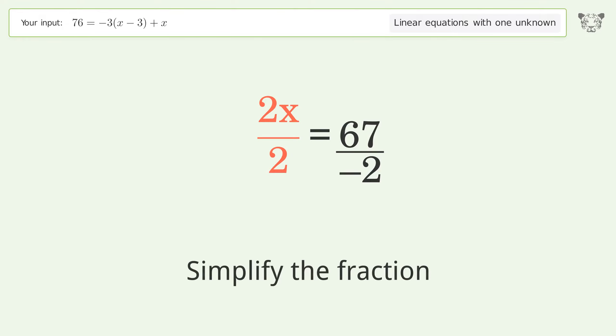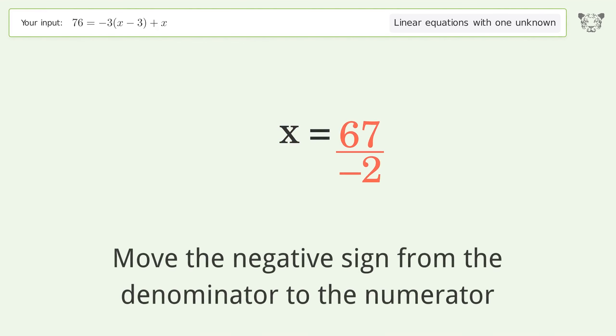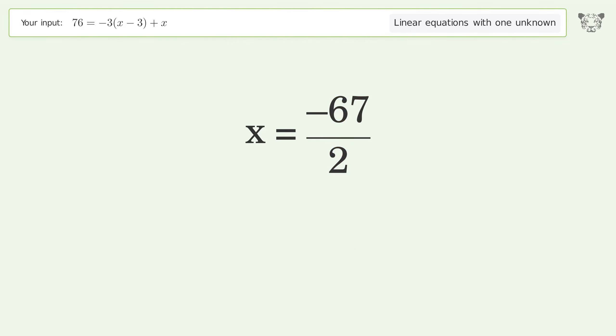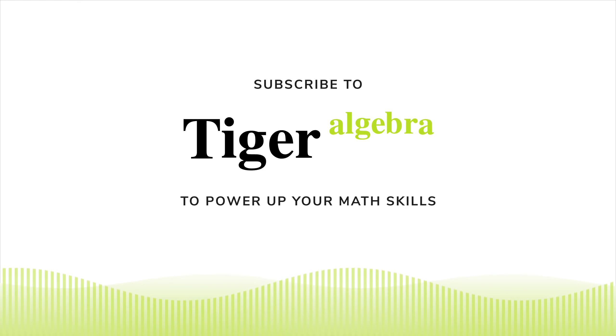Simplify the fraction. Move the negative sign from the denominator to the numerator. And so the final result is x equals negative 67 over 2.